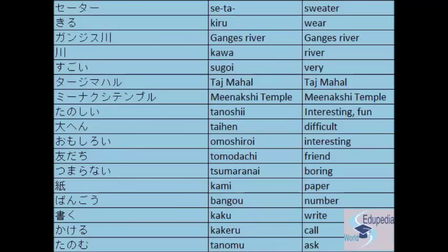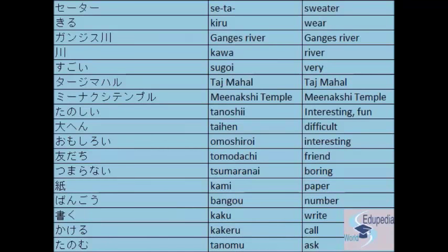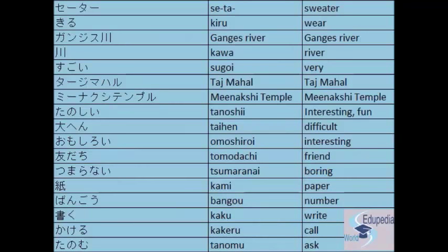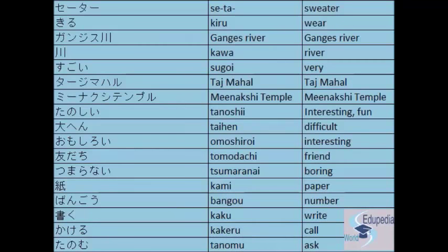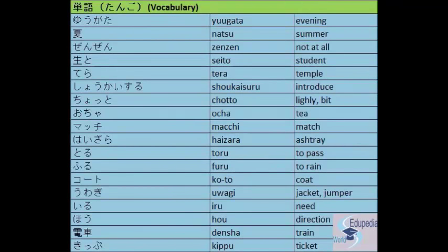'Taihen' — difficult. 'Omoshiroi' — interesting. 'Tomodachi' — friend. 'Tsumaranai' — boring. 'Kami' — paper. 'Bango' — number. 'Kaku' — to write. 'Kakeru' — to call. 'Tanomu' — to ask or to request.